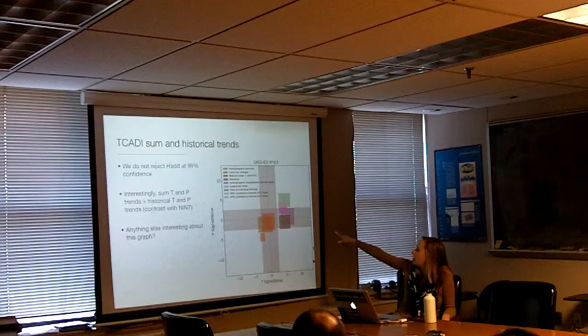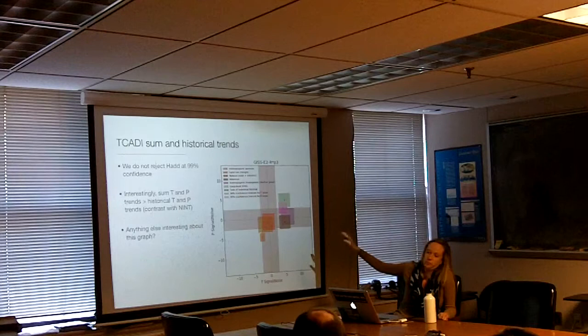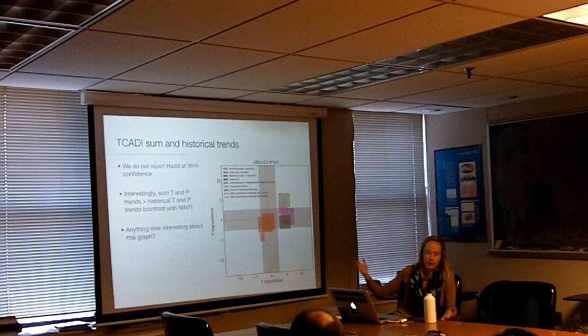In TCAT we also don't reject H-additive at 99% confidence on the century scale. But interestingly, the sum of the temperature and precipitation trends is bigger than the historical temperature and precipitation trends, in contrast with NINT. Before I move on, is there anything interesting about this graph?